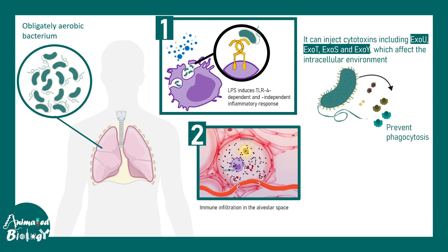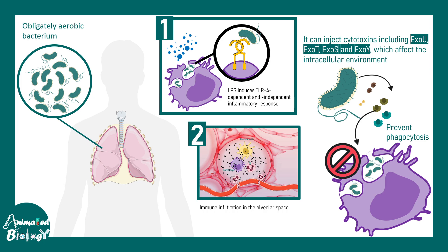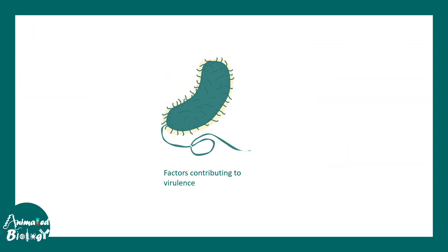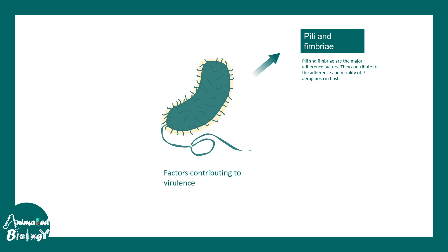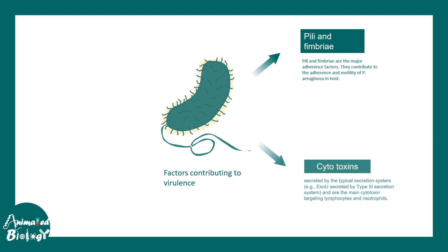Pseudomonas aeruginosa secretes exotoxins: ExoU, ExoT, ExoS, and ExoY. All of these can prevent phagocytosis, giving the bacterium greater survival chances inside the host body. Pili and fimbriae help it attach to cell surfaces and navigate through mucus layers. These cytotoxins are injected using the type 3 secretion system. There are also siderophores, which are iron-chelating agents that provide a survival advantage.